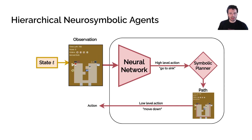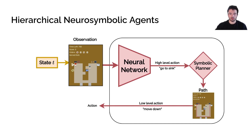How do we get a language model to play a game? We propose using a hierarchical neuro-symbolic agent, which takes a state, converts it into an observation in pixel space, and then takes this observation — or directly from the state variables — and gives it to a neural network that outputs a high-level action. This is the hierarchical aspect.